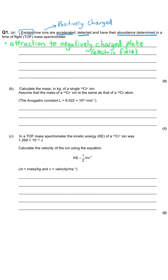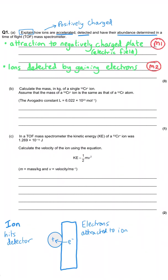Once the ions hit the detector, they cause electrons to be drawn towards them, because they are positively charged, they attract the electrons to them. So we need to say that the ions are detected because they gain electrons.